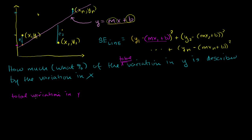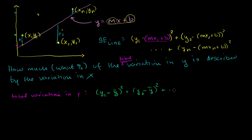When we think about variation — and this is even true when we thought about variance, which was the mean variation in y — we think about the squared distance from some central tendency, and the best central measure we can have of y is the arithmetic mean. So the total variation in y is just going to be the sum of the distances of each of the y's: (y1 − ȳ)² + (y2 − ȳ)² + ... + (yn − ȳ)². This gives you the total variation in y.